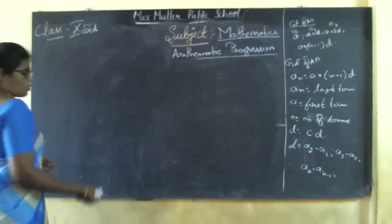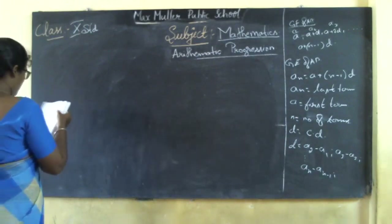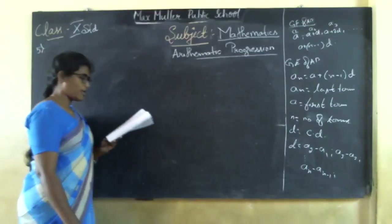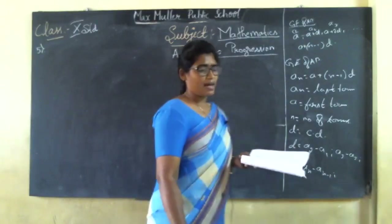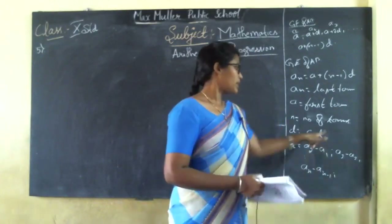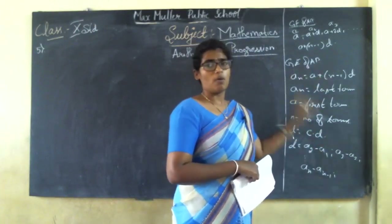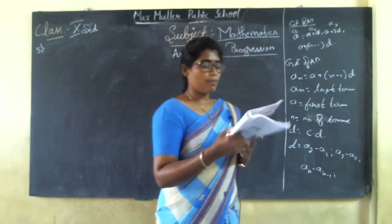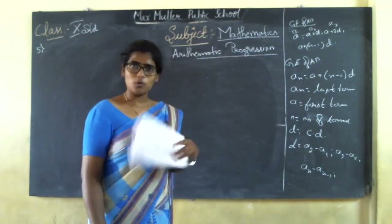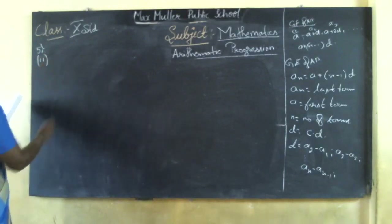The fourth question is over, so we are going to solve the fifth question. The fifth question says: find the number of terms in each of the following APs. You are going to find the n value. Two sums are given — I will do one sum and you are going to do the other. The first sum is very easy, so you are going to do that one.